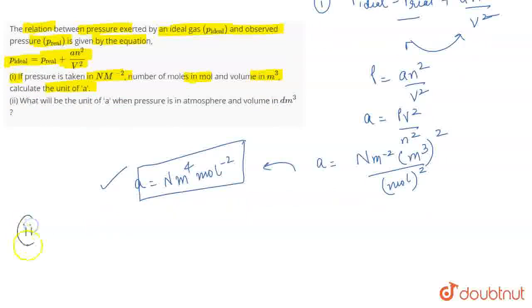Now talking about the second one, we have to calculate the unit of A when the pressure is in ATM and the volume is in dm cubed. So again, we will use this expression. The unit of P should be equal to A n squared by V squared only then these terms will be added.